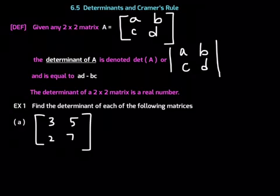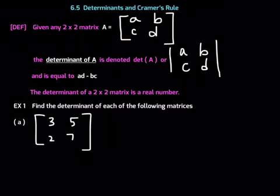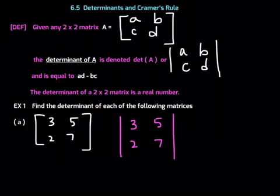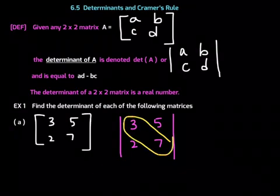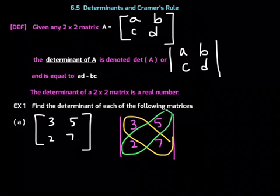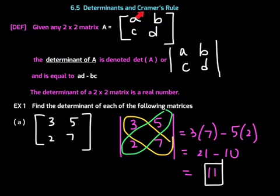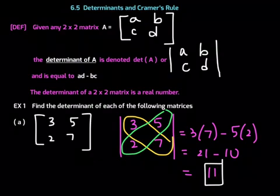Find the determinant of each of the following matrices. Here's the first one. We write it using vertical bars for determinant notation. Applying AD minus BC: it's three times seven minus five times two, which gives us 21 minus 10. The determinant is 11. So 11 is the real number associated with this two-by-two matrix. We're going to use the determinant later on in this lesson when I develop Cramer's Rule.